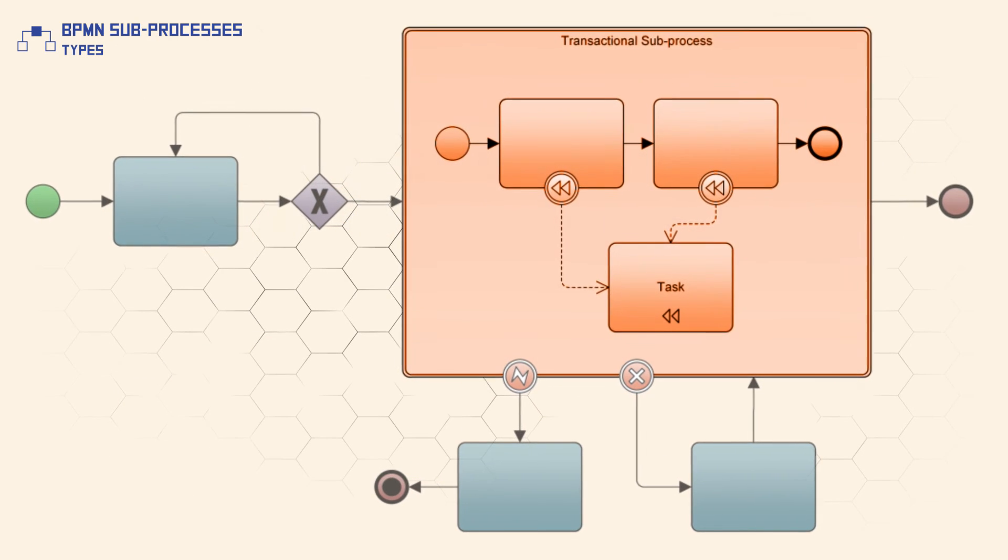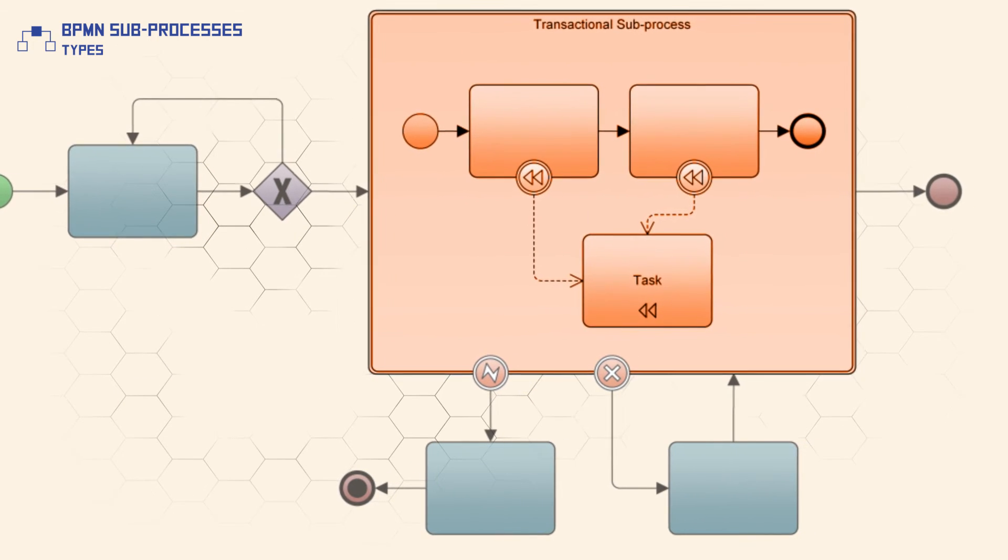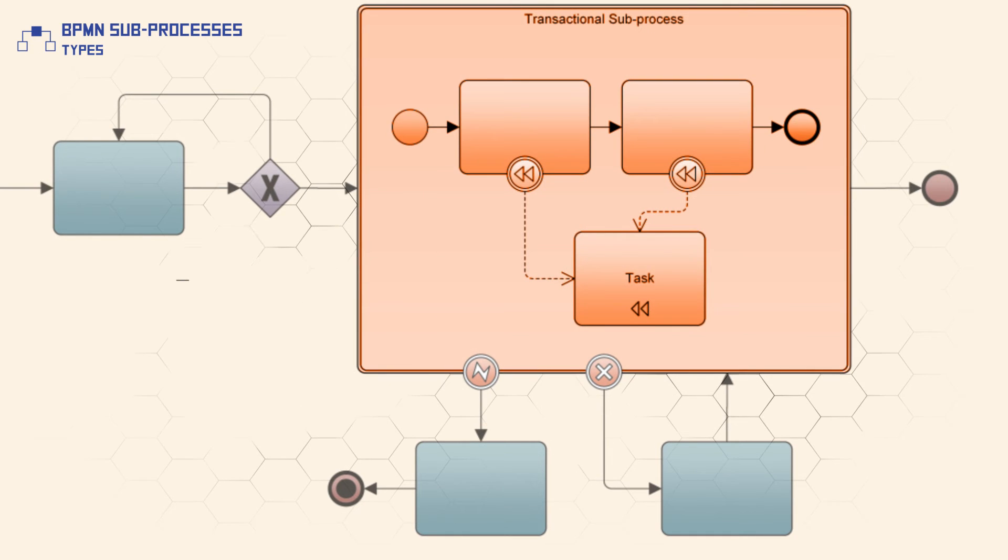A transactional subprocess is a double-lined object and is controlled through a transaction protocol. A transactional subprocess can result in three outcomes.